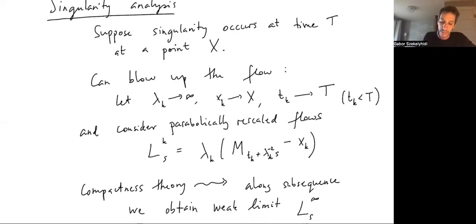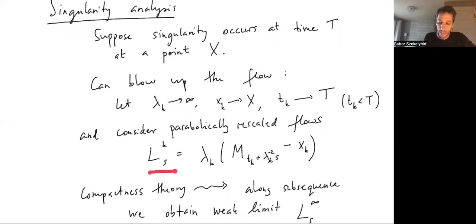Given these three sequences, for each k, we can consider this rescaled flow. This is exactly just the parabolic scaling. When s, the s will be the new time variable. When s is 0, then we're really just looking at M_{t_k}. We're translating, we're making this x_k the new origin, and then we're rescaling by λ_k.